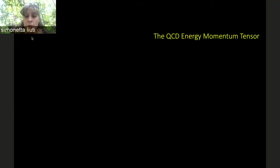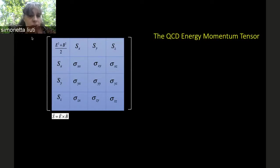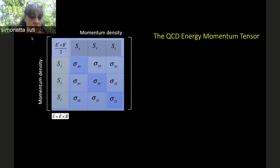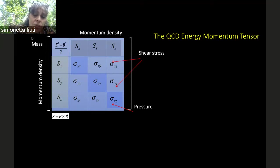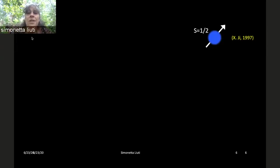The answer is in the QCD energy momentum tensor, which describes all the mechanical properties of the proton. Completely analogously to QED, there's a momentum density in the time components, the mass term, a pressure term on the diagonal, and shear stress components on the off-diagonal spatial components. The fundamental step was taken in 1997 by Xangdong Ji.